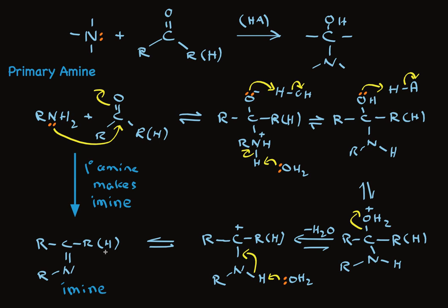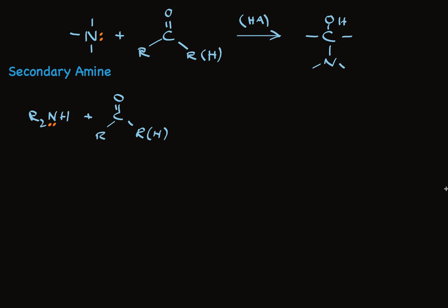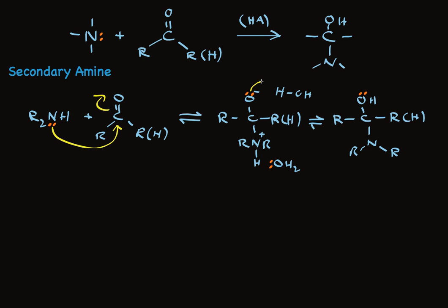Now let's look at the reaction with secondary amines. And I'll tell you right now that the overall product is different. Secondary amines make enamines. Take a look. The reaction starts out in the very same way. Nucleophile adds to carbonyl. Equilibrium reaction. We have an initial product that needs two proton transfers. The oxygen picks up a hydrogen, and the nitrogen loses a proton.